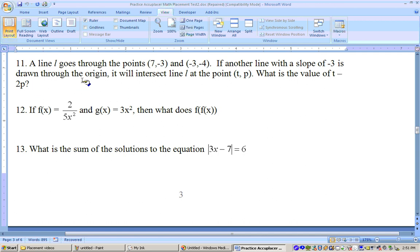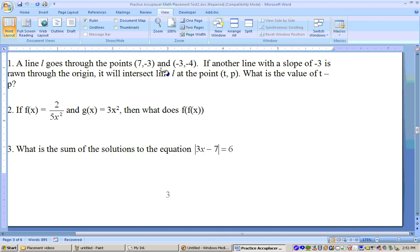11, it says a line L goes through these points right here. If another line with a slope of negative 3 is drawn through the origin, it will intersect the line at this point (t,p). What is the value of t minus 2p? So this is a long question because, first of all, we have to get the equation of a line that goes through these two points. Then we have to get the equation of a line that has a slope of negative 3 that goes through the origin, find the point of intersection of those two lines, and then find out what t minus 2p is.